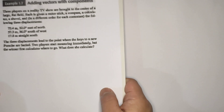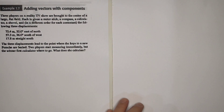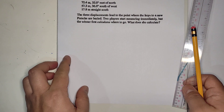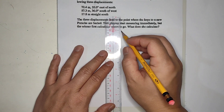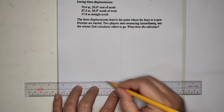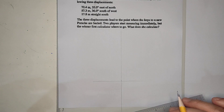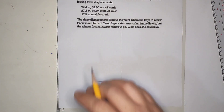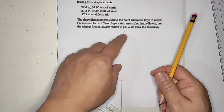So, three of them walked. Now, let's plot what happened. At the middle of the field, let's say here — the starting point is here. This is north and this is east. So, east of north means that direction.